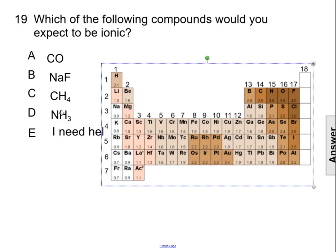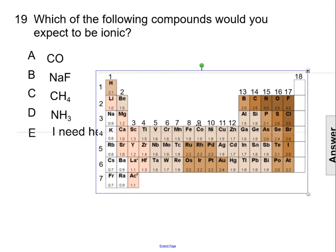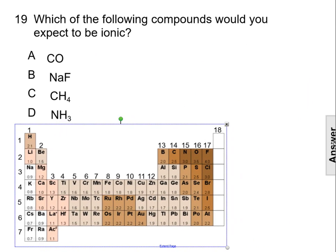That will not form an ionic compound. And NH3 is nitrogen and hydrogen, 3.0 versus 2.1. It's a 0.9 difference. That will not form an ionic compound. So the answer is B, NaF.